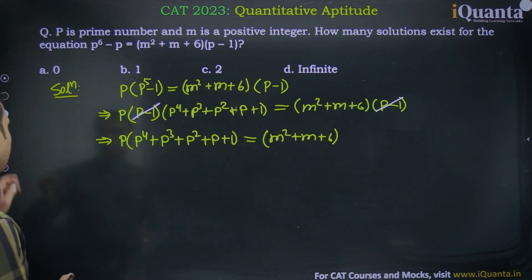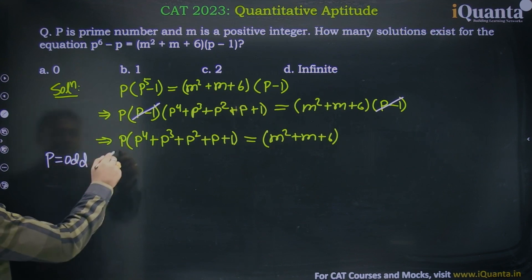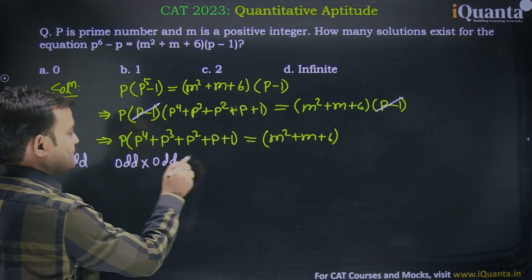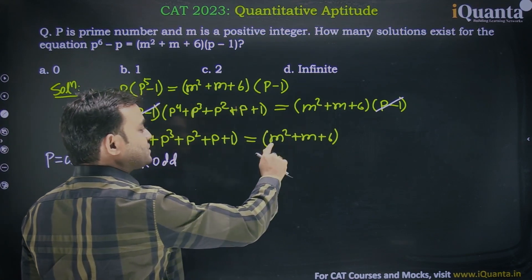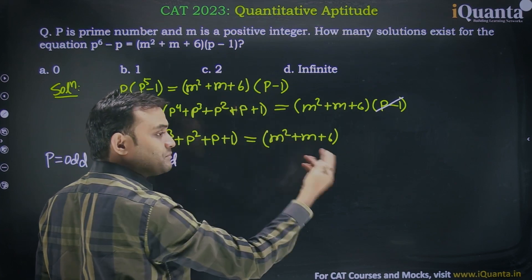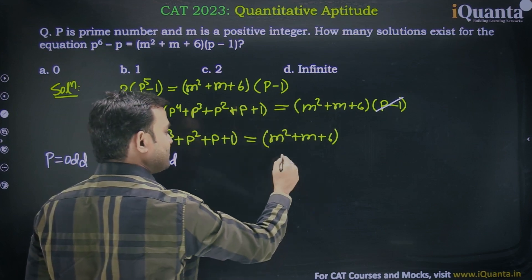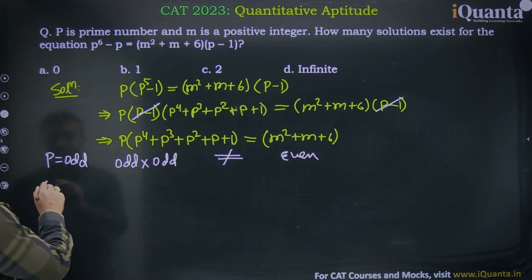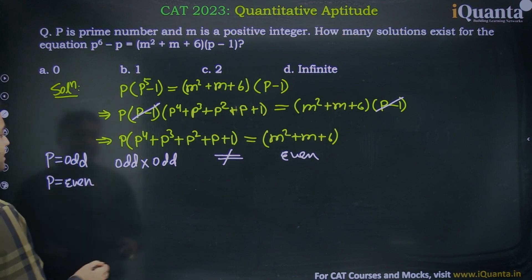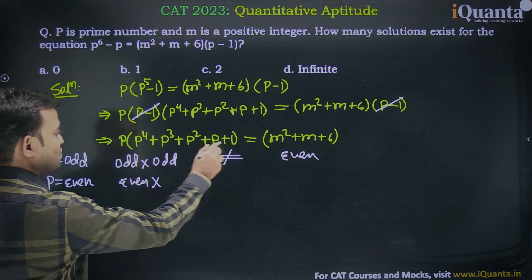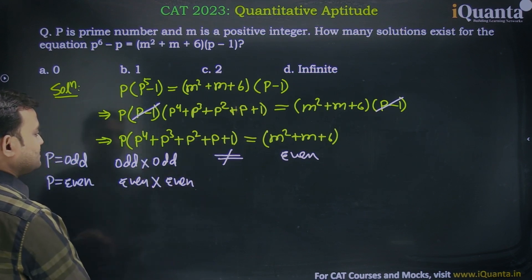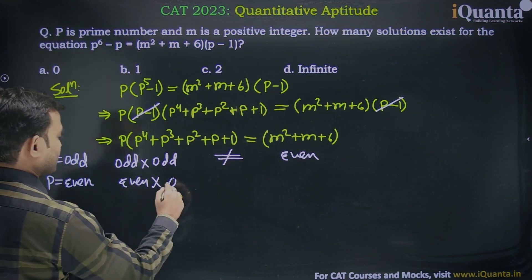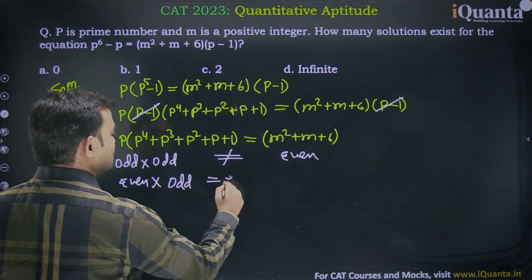If we put p equal to odd, then odd into (odd plus odd plus odd plus odd plus odd) — this whole expression will become odd. On the right side, if m is even: even squared plus even plus 6 is even; if m is odd: odd plus odd plus even is also even. So odd cannot equal even — this is never a possibility. Now if we put p equal to even, the left side becomes even into (this whole term which is odd) giving even, and the right side can also be even. So p equal to even is a possibility.